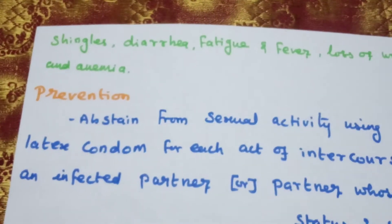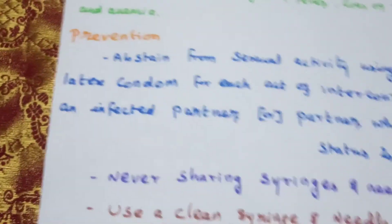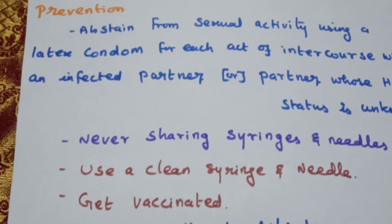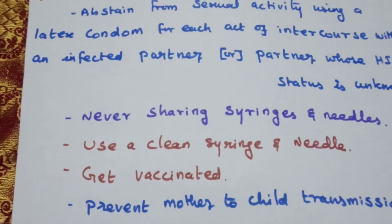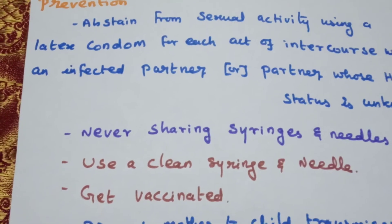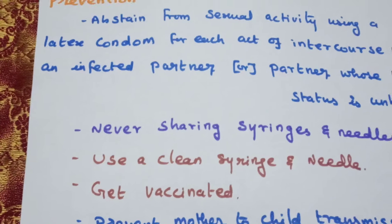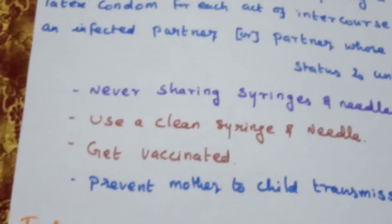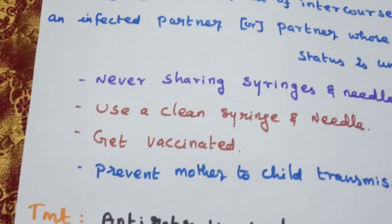How to prevent HIV? Use a latex condom. Never share syringes and needles. Use clean syringes and needles. Get vaccinated. Prevent mother-to-child transmission. Avoid pregnancy if the mother is infected.